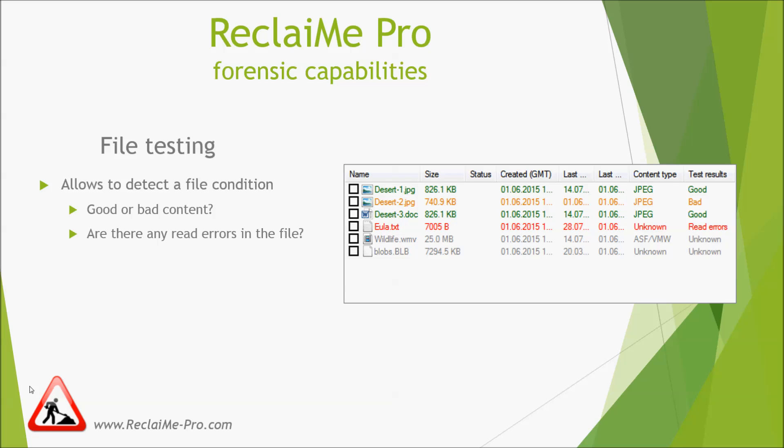The main limitation is due to the fact that nothing can replace a manual check. For example, there is no way software can distinguish the last, useful version of a file from old ones. Typically, Reclaiming Pro cannot and does not seek to read a file in full detail. Whenever possible, the software quickly scans the file checking only key points. This is because there are a lot of file formats, some quite complex, and it would be too expensive to implement a complete reader for every file format. For some formats, especially compressed files, full-scale testing requires excessive amounts of computing power.